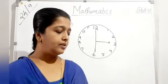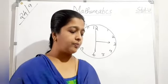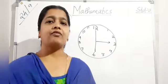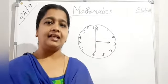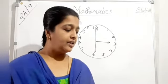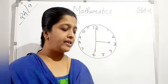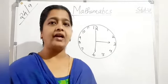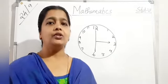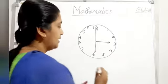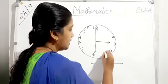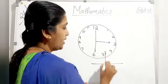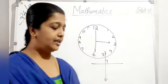Two intersecting lines are perpendicular if the angle they form is 90 degrees. The perpendicular bisector of a line segment is perpendicular to the segment and divides it into two equal parts, forming 90 degrees.